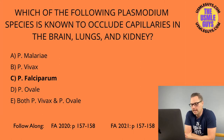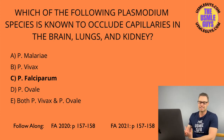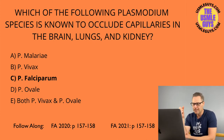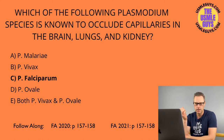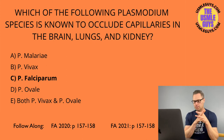Leishmania is transmitted via the sandfly and can cause a visceral or cutaneous condition. If cutaneous, it's characterized by skin ulcers. If visceral — also known as kala-azar — it can cause spiking fevers, pancytopenia, and hepatosplenomegaly. We diagnose this by identifying amastigotes within macrophages, and treatment is with amphotericin B or sodium stibogluconate.